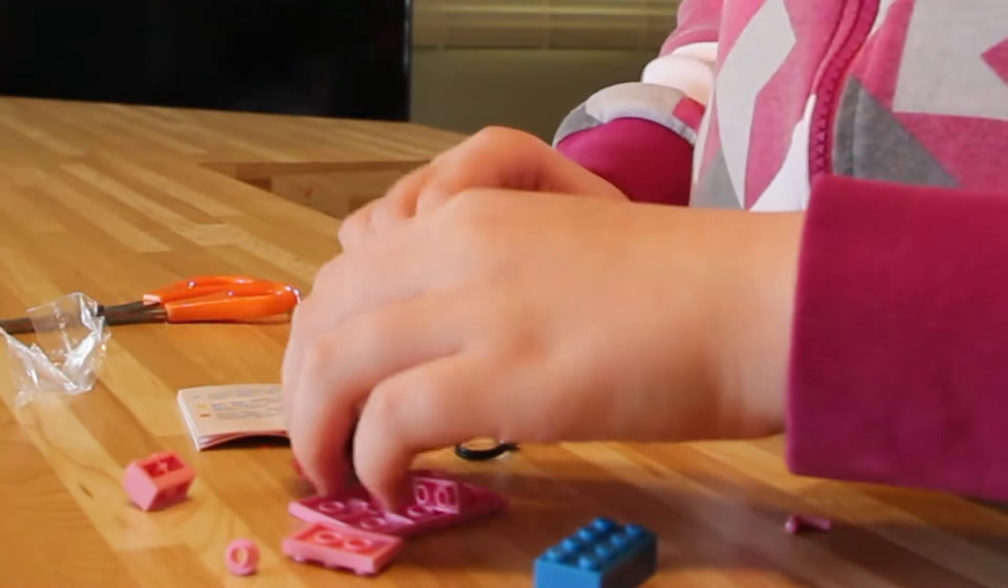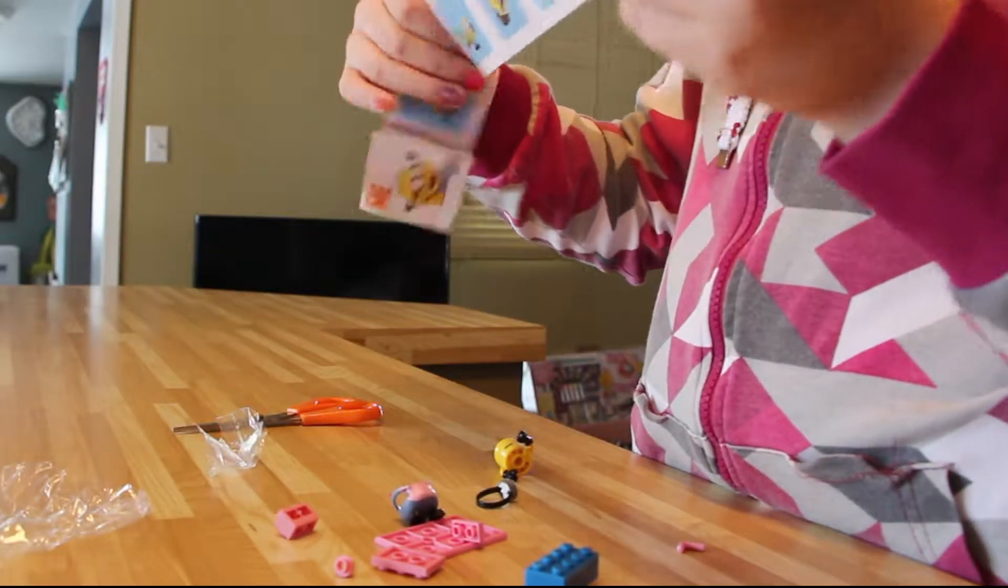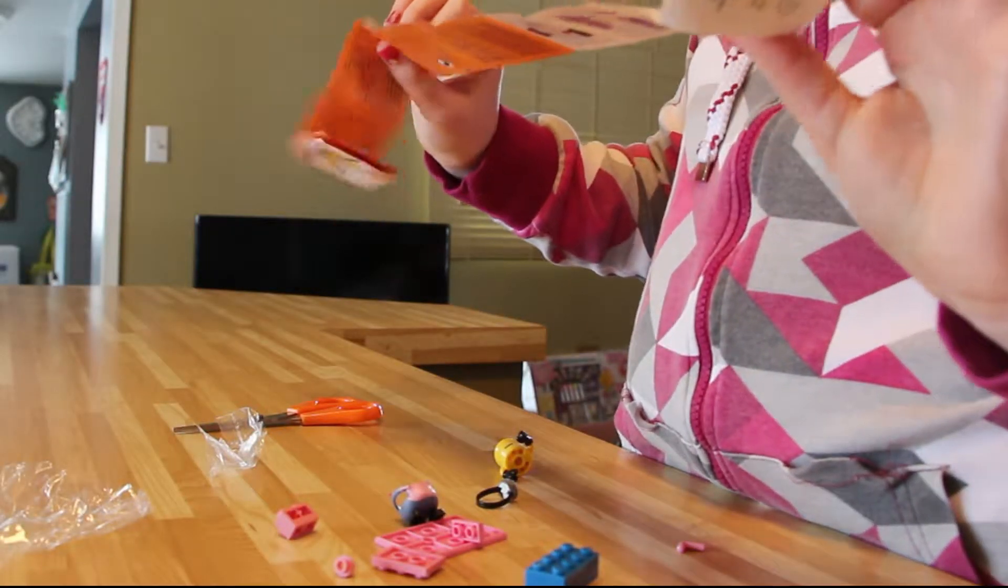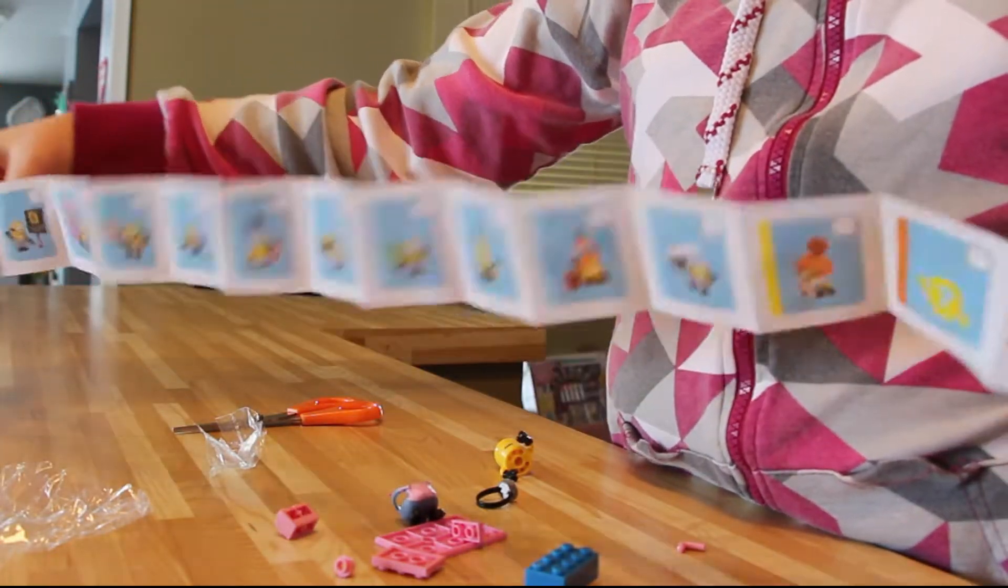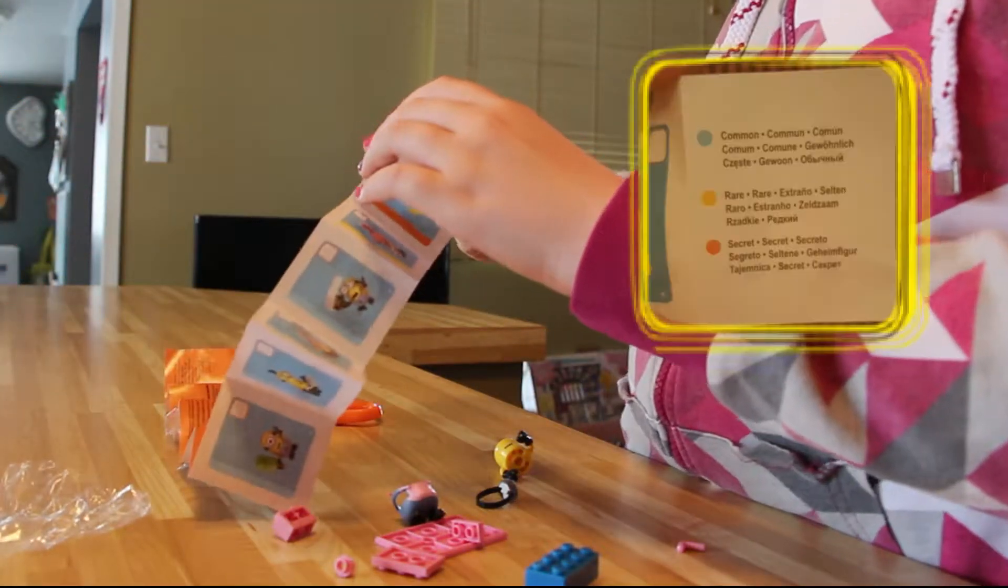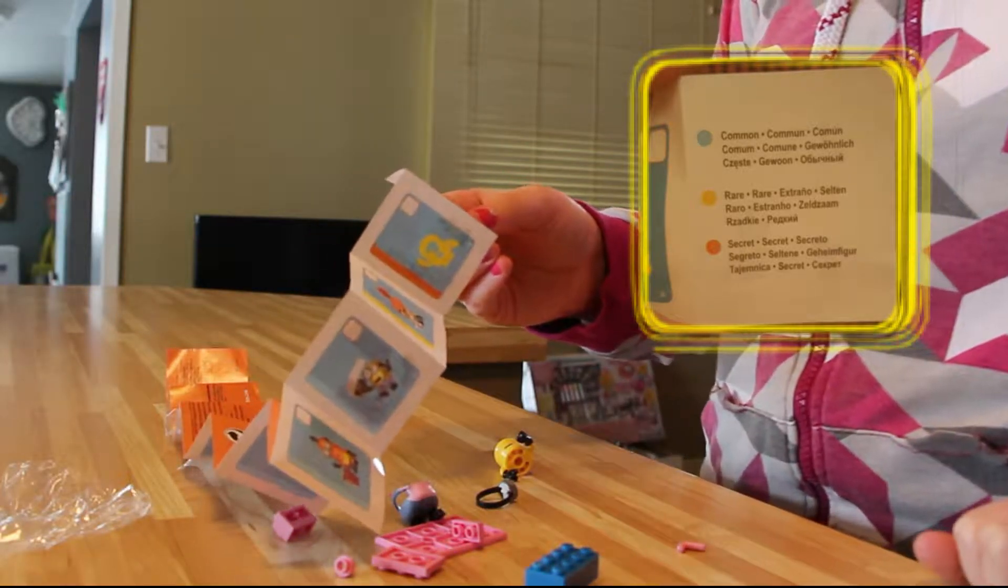Okay, I think I'm gonna look if there's some instructions because it looks sort of complicated. Okay, so there's a big long list of ones I can get. Blue common, yellow rare, orange secret.